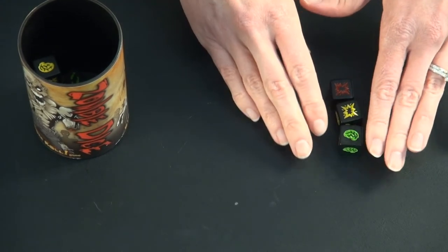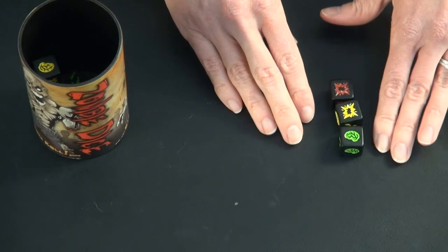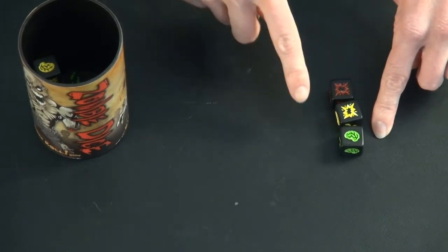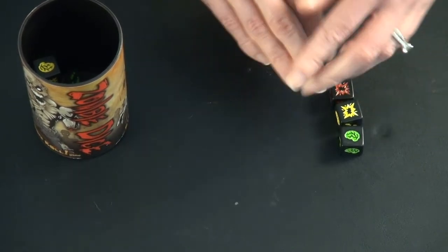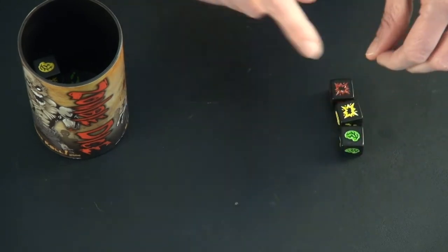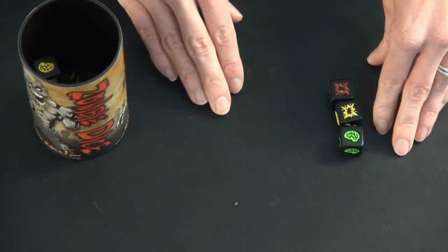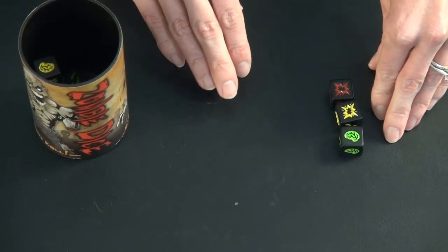And you get to keep your score from previous rounds. So the person before had one. If the next round they get two, and then the next round they get a few more, you keep on adding those up. And whoever gets to 13 brains first is the winner.